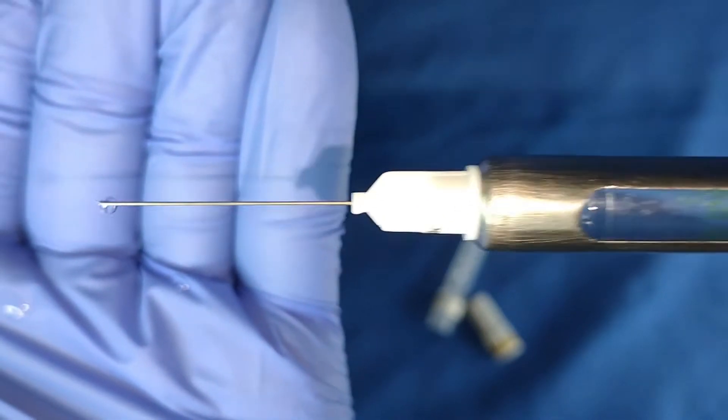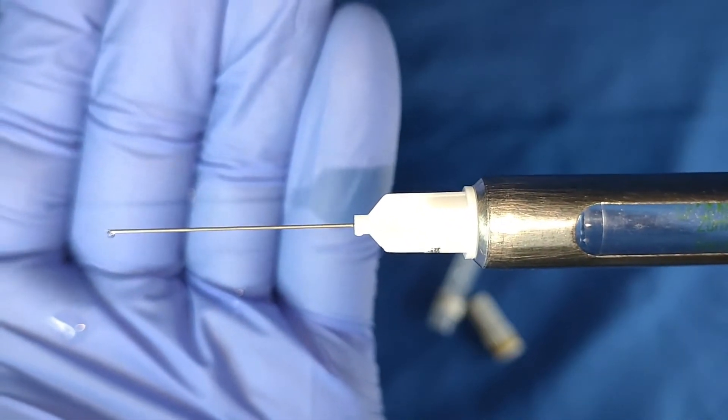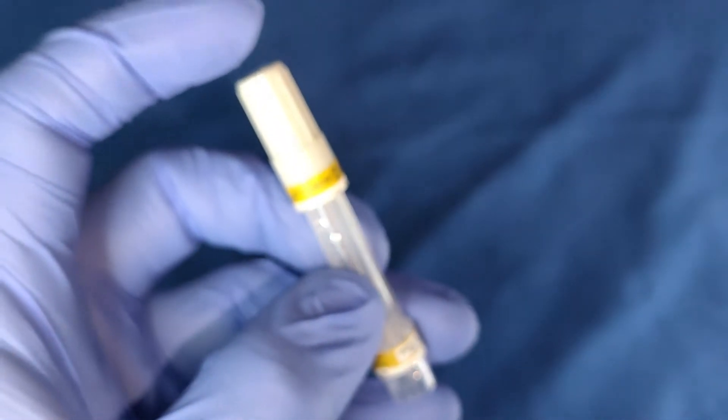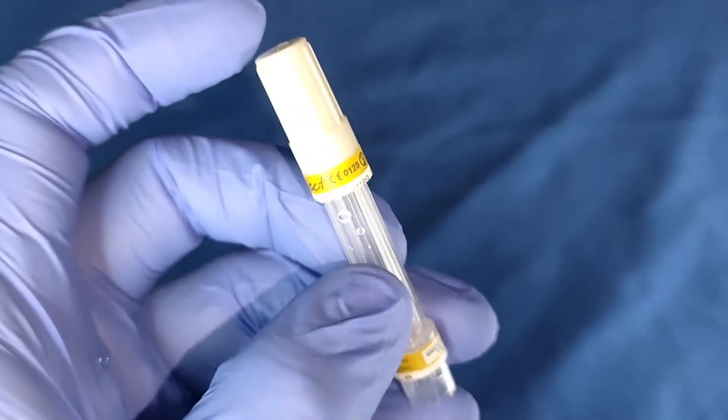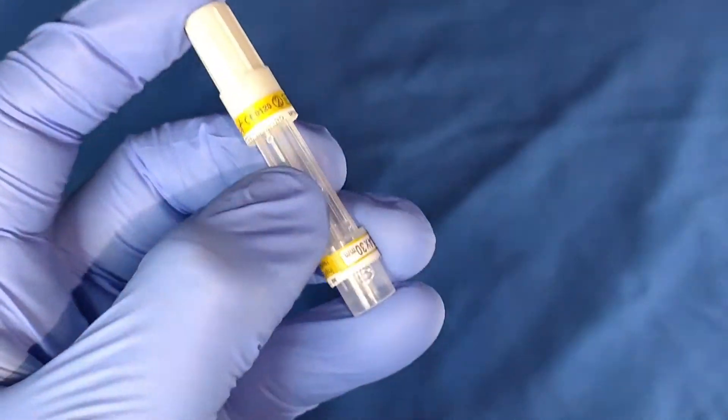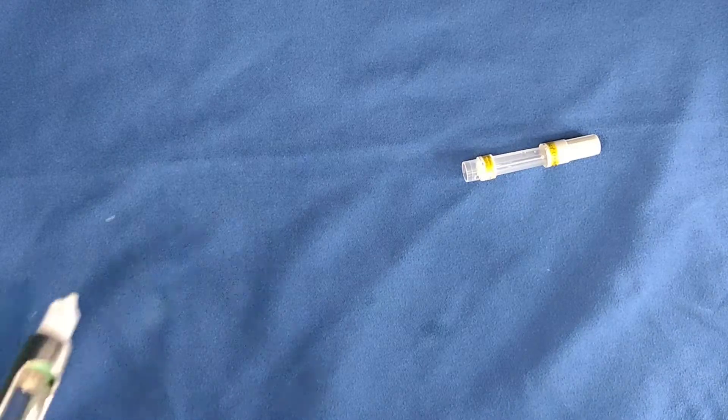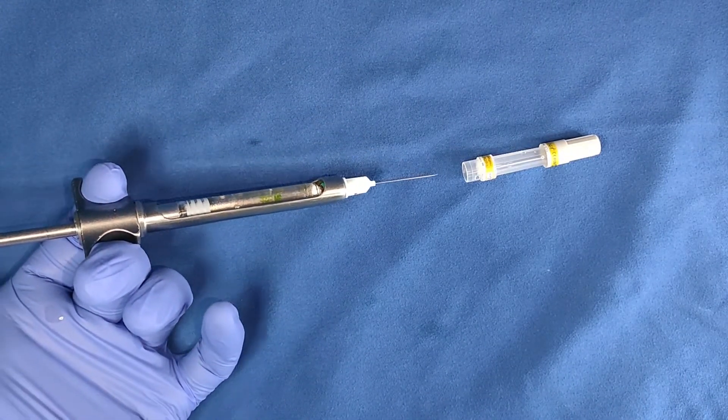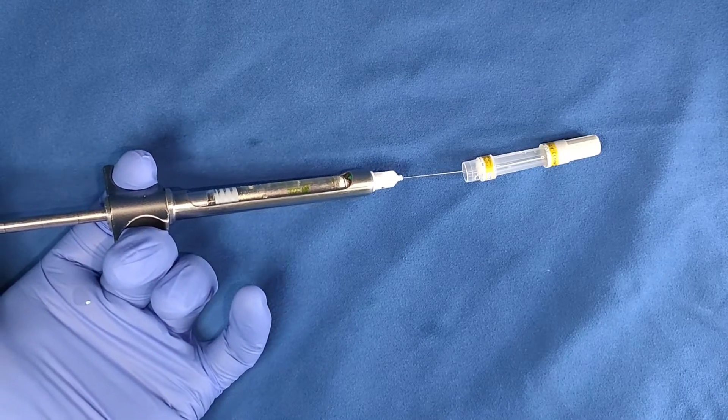You're now ready to administer local anesthetic. This small cap, make sure to not throw it away. Place it here at the end of the bigger cap. I'll show you how to close it. Use the one-hand scoop method.